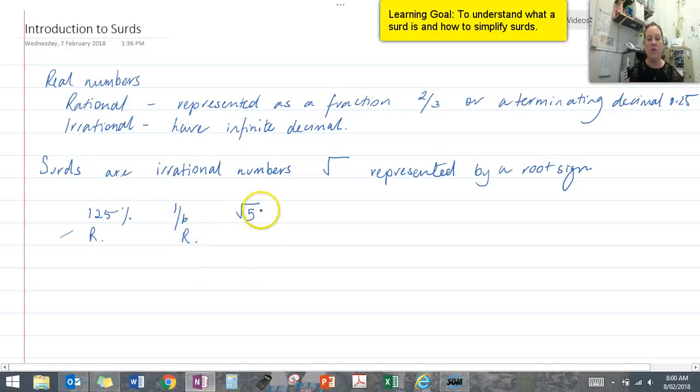And we have this one here, the square root of 5, and that would be irrational. If you put that in your calculator, you can see that it will have a never-ending decimal value.